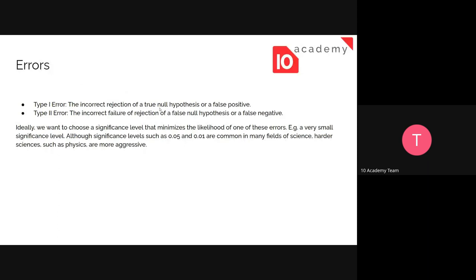A Type 1 error means the null hypothesis is right and we're not supposed to reject it. If the null hypothesis says the recommendations are not going to affect the training, and we incorrectly reject that, we've committed a Type 1 error. Type 2 error is the incorrect failure to reject a false null hypothesis — a false negative. We were supposed to reject the null hypothesis, but our analysis failed to do so, so we've committed a Type 2 error.